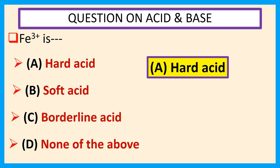Acceptor atoms which have small sizes, are of high positive oxidation states, and do not contain unshared pairs of electrons in their valence shell are termed as hard acids. These properties lead to high electronegativity and low polarizability. They hold their valence electrons more tightly. Thank you for watching this video.